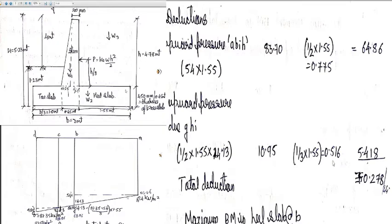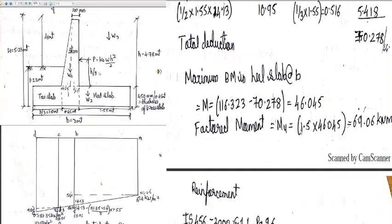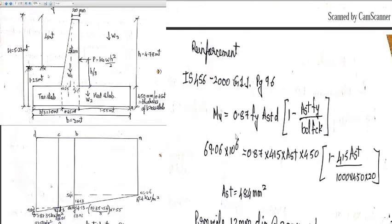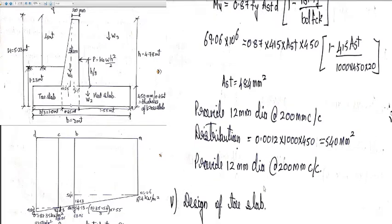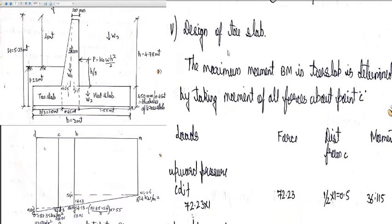The triangular portion of the upward pressure on the heel slab has a force of 10.95 kN acting at one-third of 1.55 m from B, giving a moment contribution. The total upward pressure deduction moment worked out to 69.06 kN·m. The net moment was used to design the heel slab per IS 456, giving Ast = 484 mm², and 12 mm diameter bars at 200 mm center-to-center were provided.